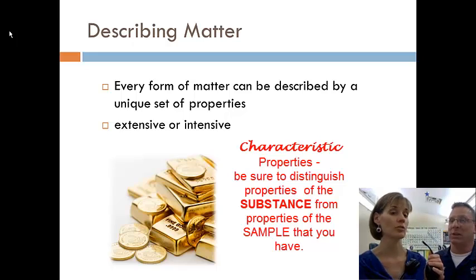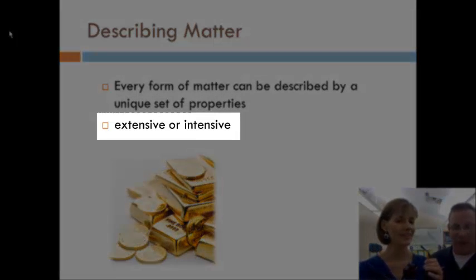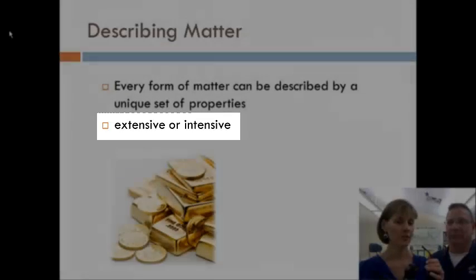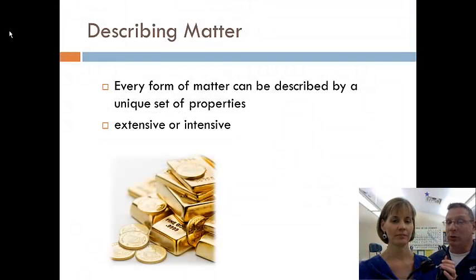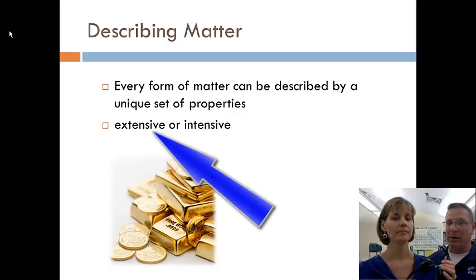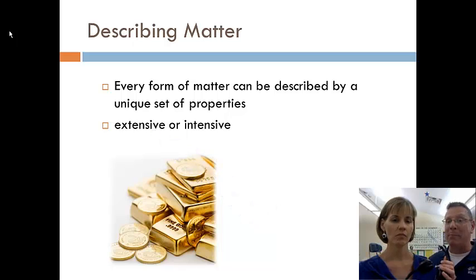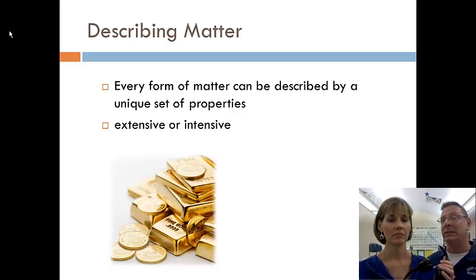So when we're looking at these words, extensive or intensive, which one are we talking about? Mass would be an extensive property. Extensive properties depend on the amount of substance that you have. Like 2 liters of coke. I could have 2 liters of anything, and having 2 liters of something doesn't tell me what that substance is.